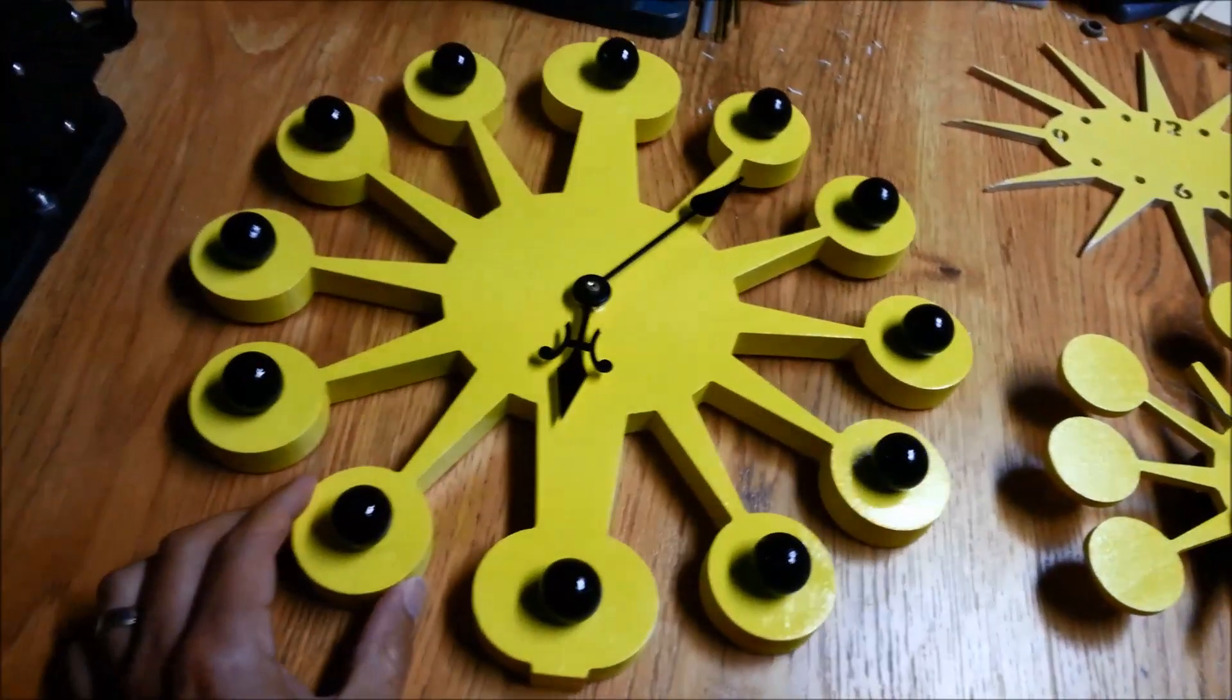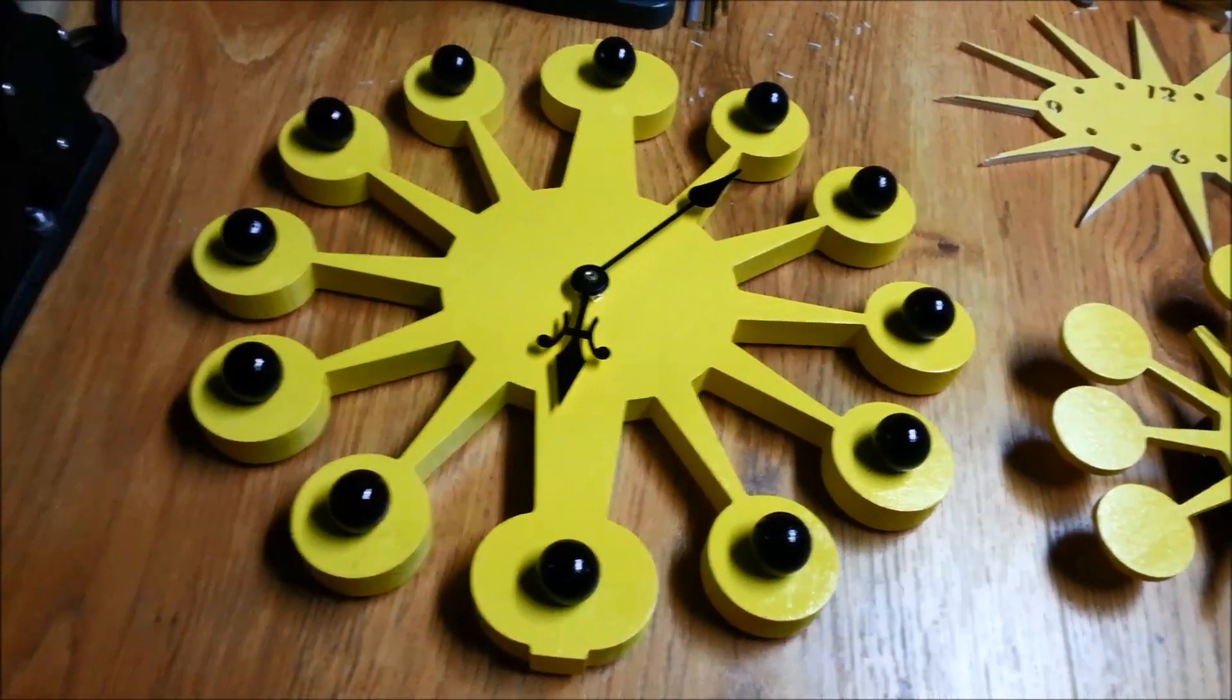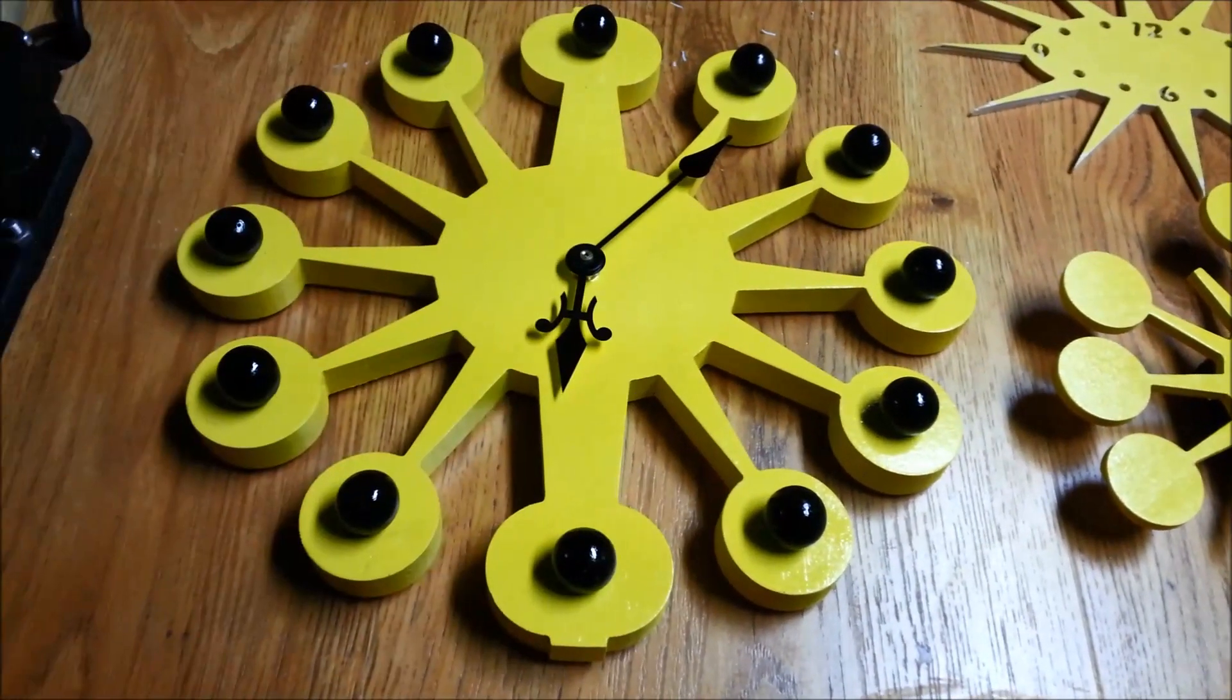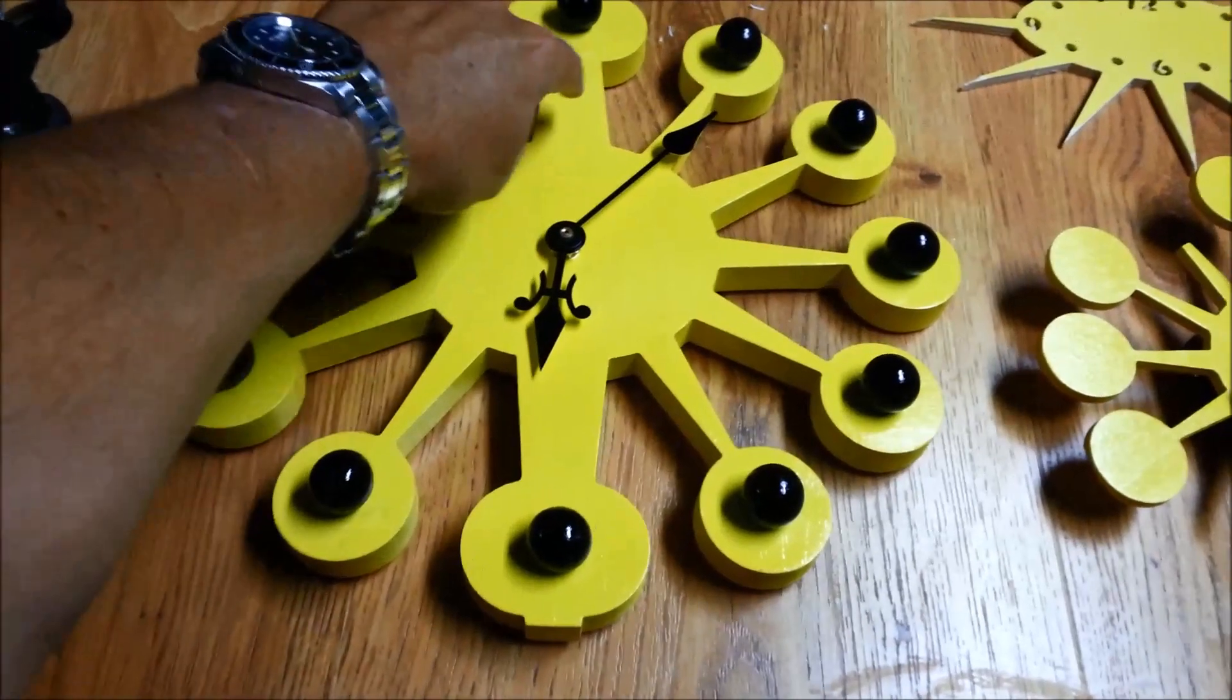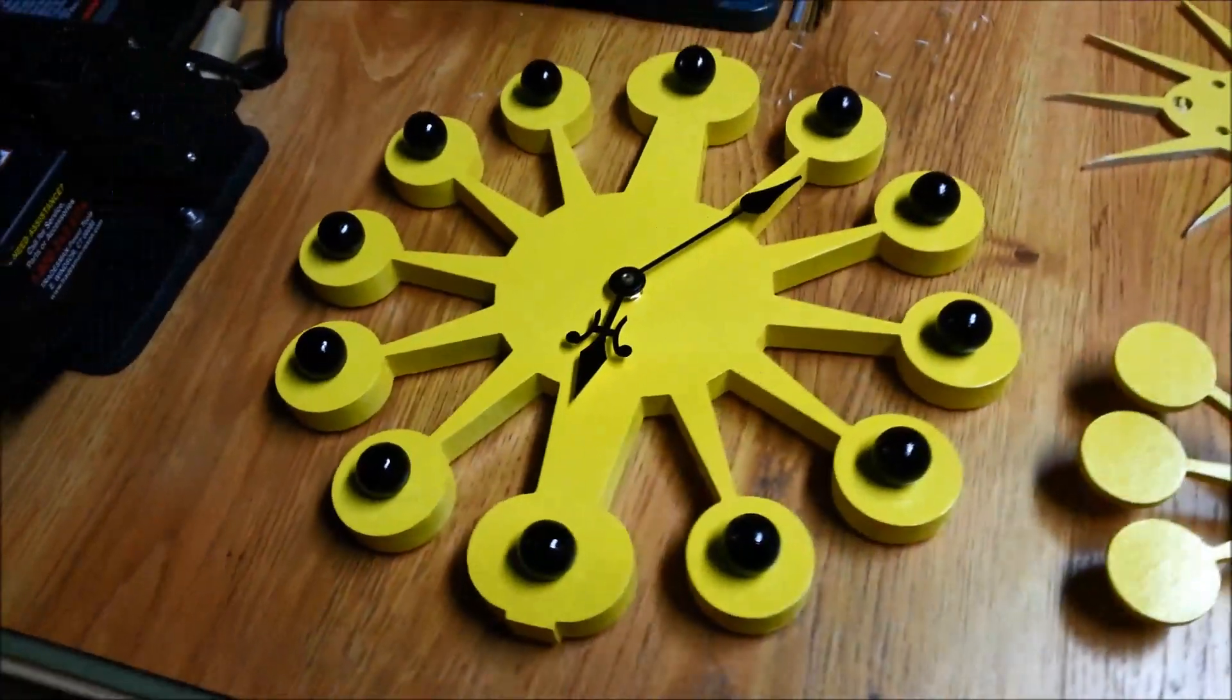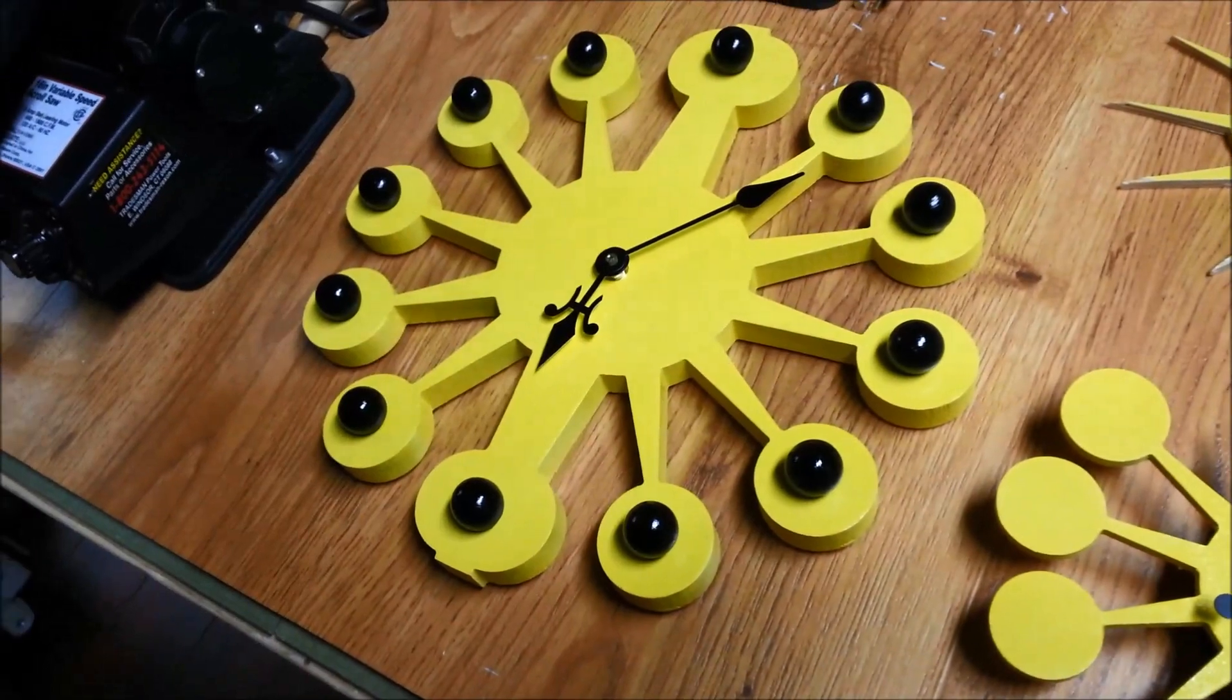But by breaking the design up into two pieces and gluing it together, we can make one that's a whole lot bigger. There's a seam that goes through the middle here, and it's made up of two different sides.